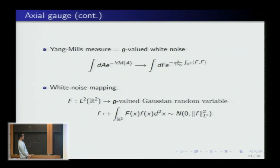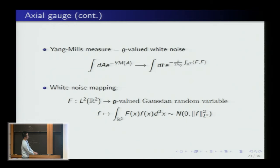More formally, white noise is a map from L² functions to Lie-algebra-valued centered Gaussian random variables, with variance equal to the L² norm. Formally: take a test function f, smear it against the distributional field F to get a random variable. When you compute the expectation of the square, you get a delta function from the two copies of F, yielding the f² term. This is a more precise way of making sense of what the path integral over F means — it gives G-valued white noise.